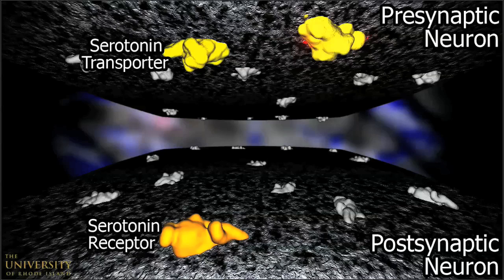This scene shows a presynaptic neuron on top, a postsynaptic neuron below, and the gap of synaptic space in between. The three proteins essential to serotonin's mechanism are shown in yellow, while the neuron's other proteins are rendered less prominently.